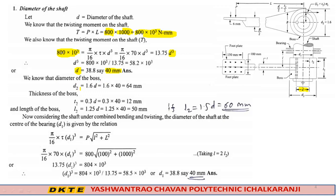We know that the dimensions of the boss from empirical relations: d₂ equals 1.6d equals 64 mm. Thickness of the boss t₂ equals 0.3d equals 12 mm. L₂ equals length of the boss equals 1.25d equals 50 mm. However, we'll consider L₂ as 1.5d equals 60 mm.